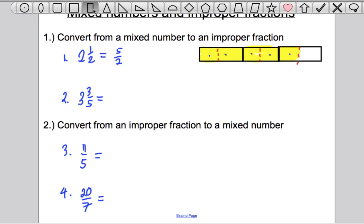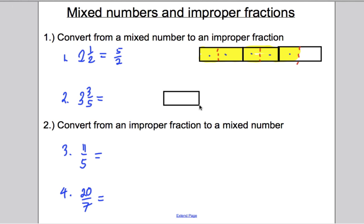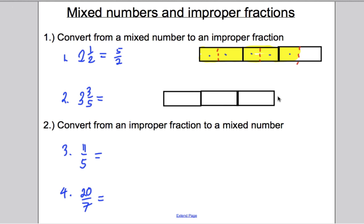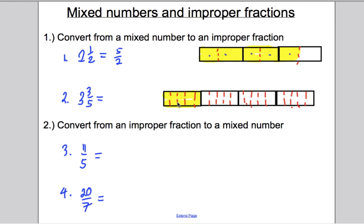Let's do the same with 3 and 3 fifths. We draw four boxes because 3 and 3 fifths is bigger than 3. We split each box into fifths — five divisions in each. We colour in all three whole boxes and 3 of the fifths in the fourth. Counting all the fifths we've coloured: 1 through 18. So we have 18 fifths. That's our answer.